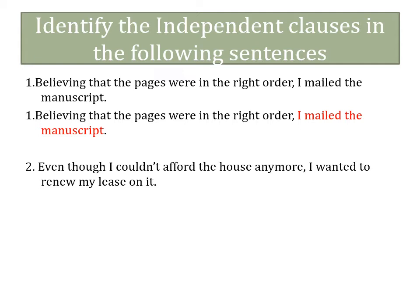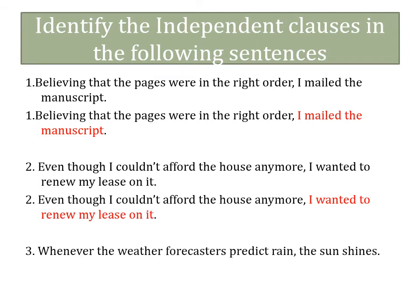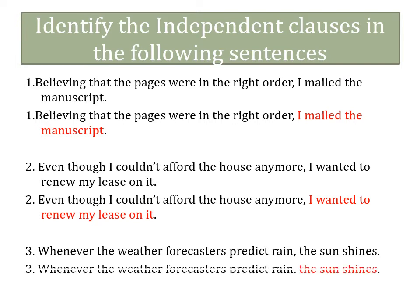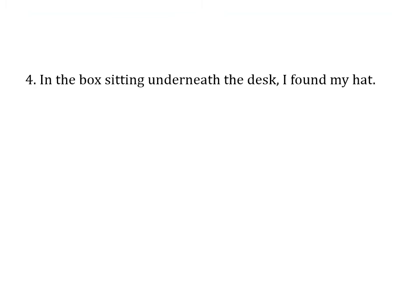In 'Even though I couldn't afford the house anymore, I wanted to renew my lease on it' — the first section has subject 'I' and verb 'couldn't afford,' the second has subject 'I' and verb 'wanted.' Only the second one has a complete thought, so 'I wanted to renew my lease on it' is the independent clause. In 'Whenever the weather forecasters predict rain, the sun shines' — only the second part has a complete thought, so 'the sun shines' is the independent clause.